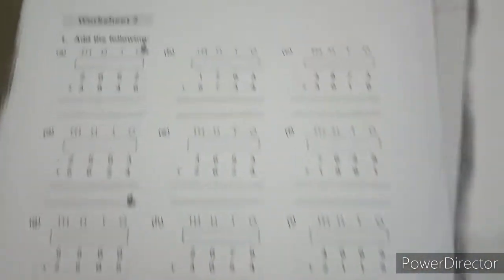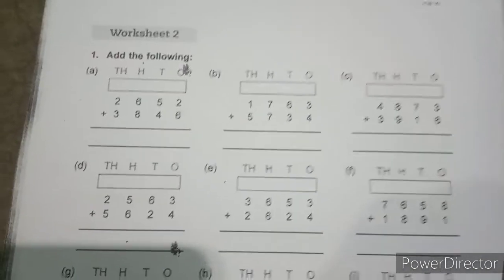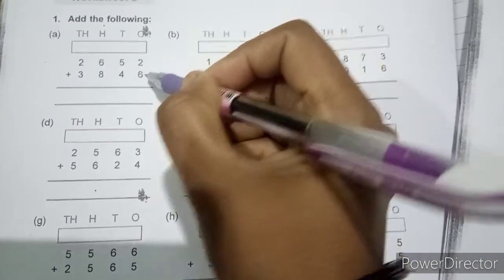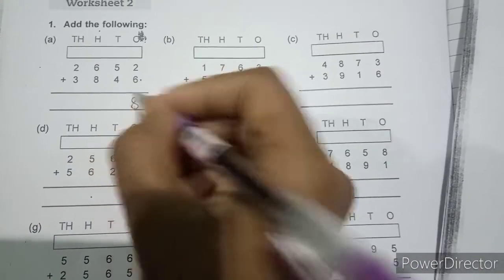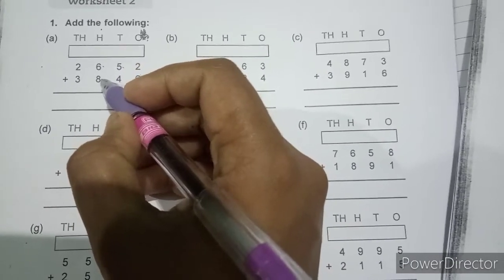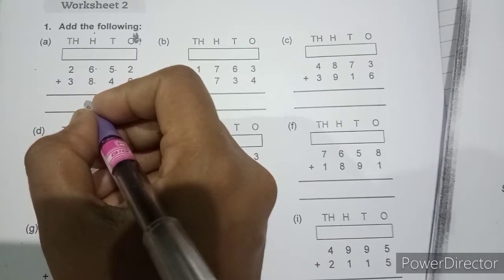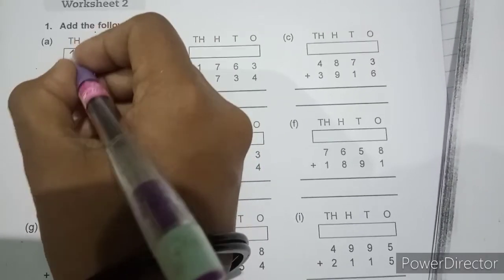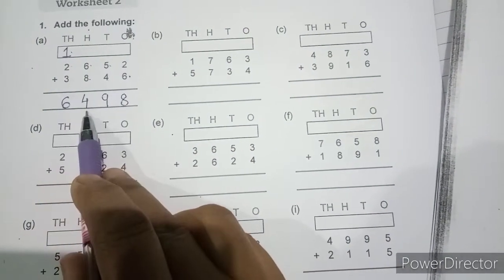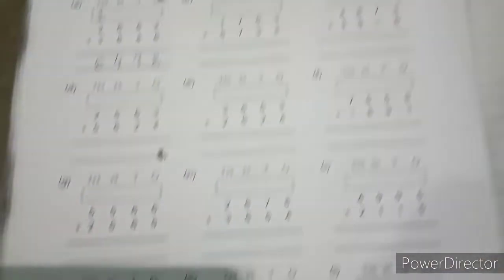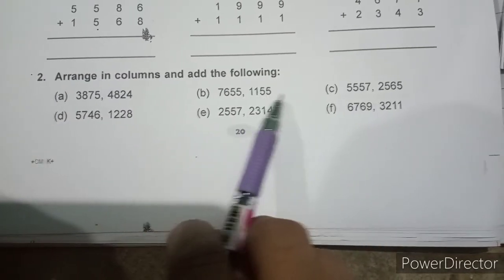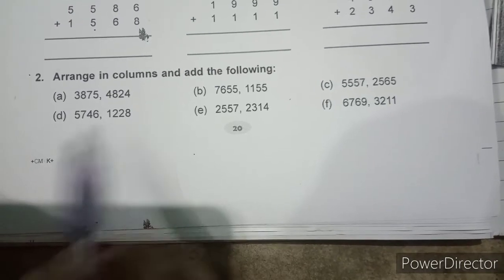After that, we have to do worksheet 2. Our first question is this. When we add the numbers at ones place, what we will get? We will get the number as 8. It is a single digit number. 5 plus 4 is 9, also a single digit. But 6 plus 8 is 14, which is 1400. 1400 means 1000 plus 400. So we have written 400 and carried 1000. 1000 plus 2000 plus 3000 equals 6000. The answer is 6498. And here there are some questions that we have to arrange in columns and add.